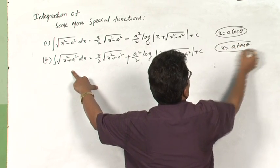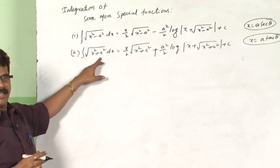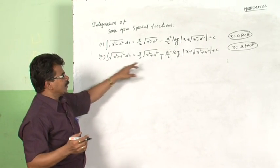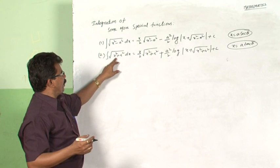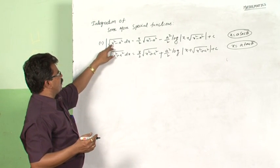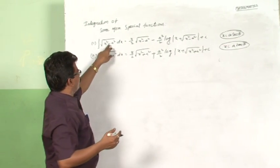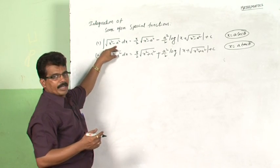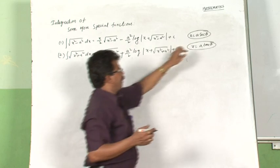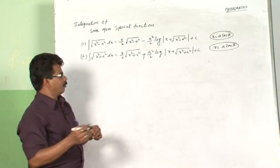To derive this formula, we take x equal to a tan theta. You may wonder why a tan theta — this is in the form of 1 plus tan square equals secant square. The suitable function is tan theta whenever you have this type. Here it is secant square minus 1, that is why we take x equal to a secant theta. The simplest form is secant form. In this case we take x equal to a tan theta because 1 plus tan square equals secant square.